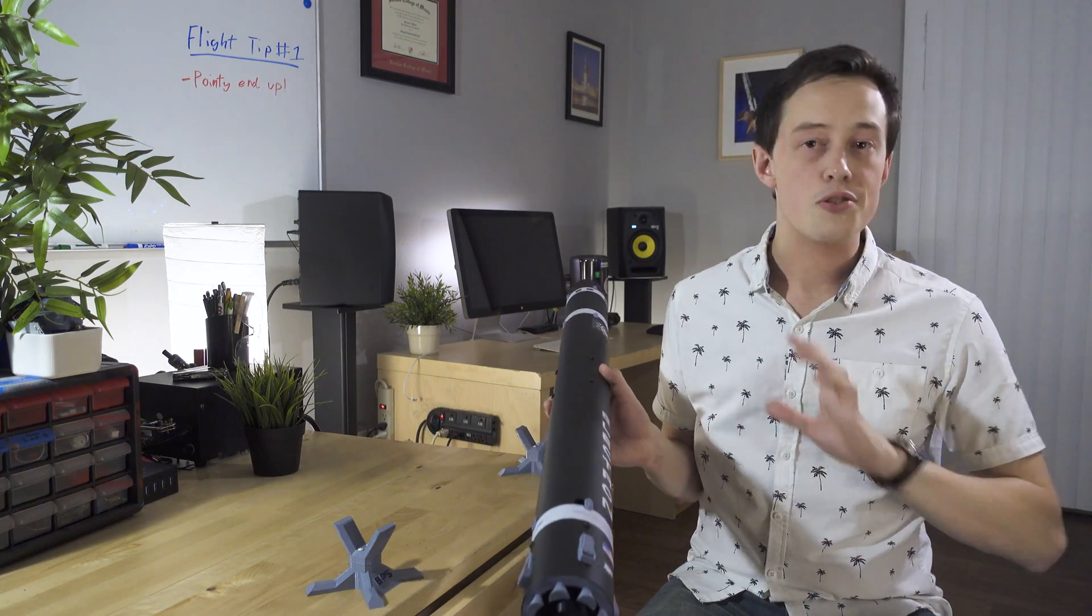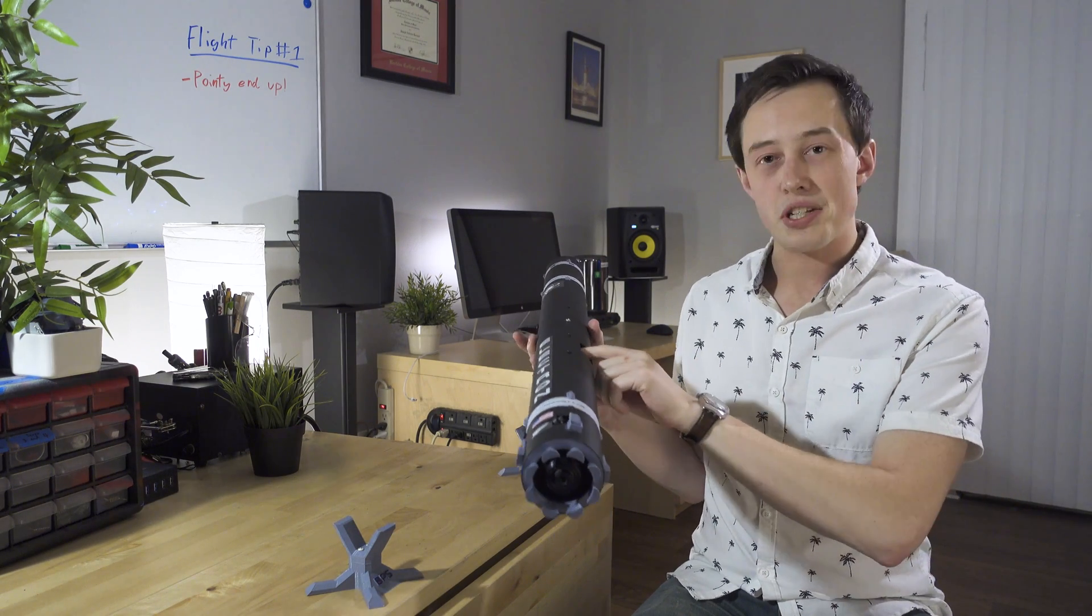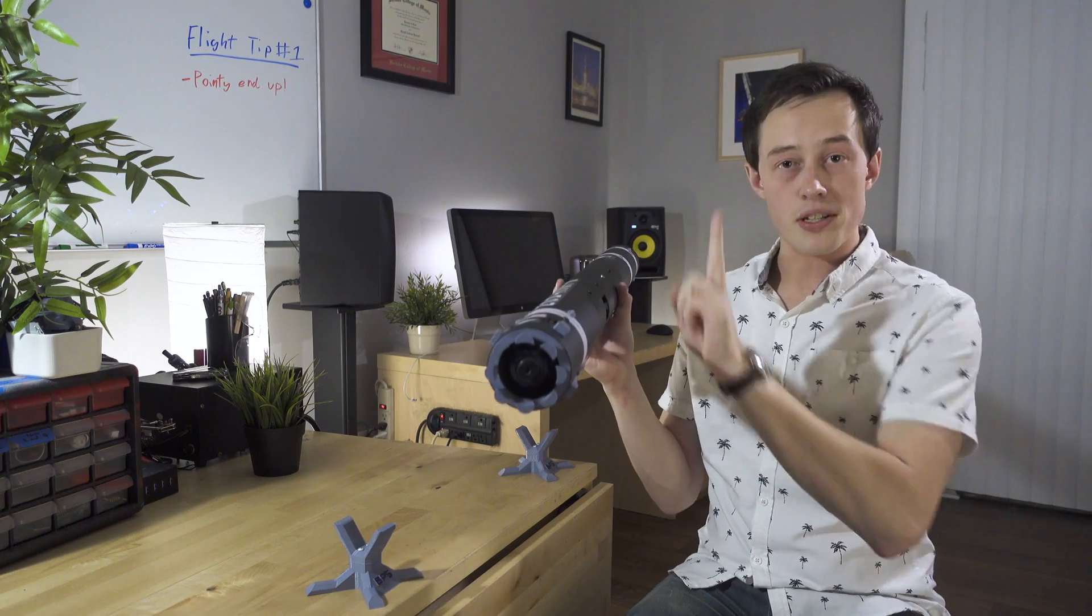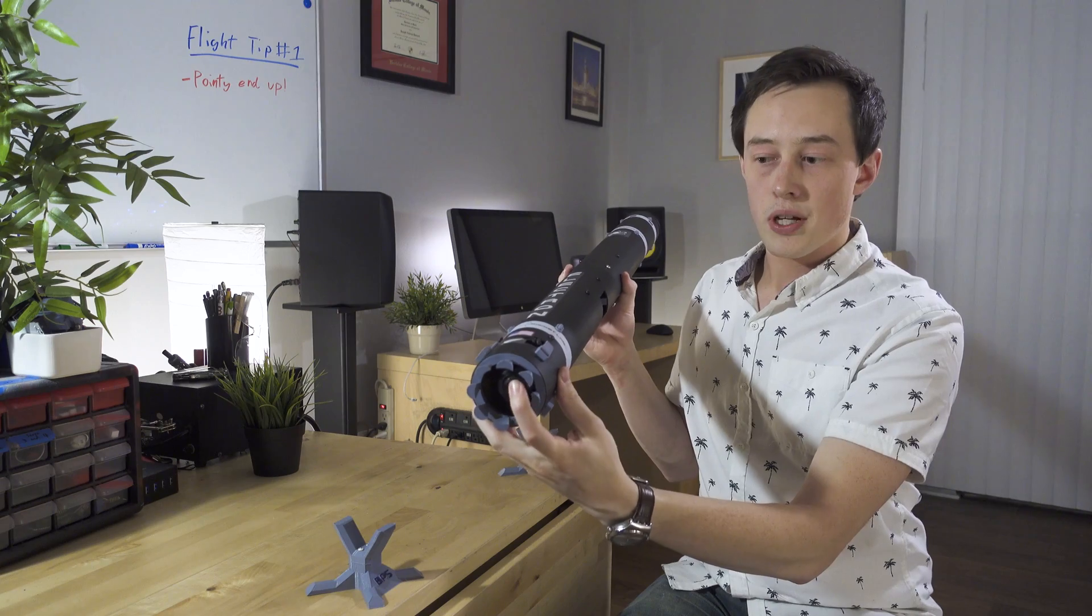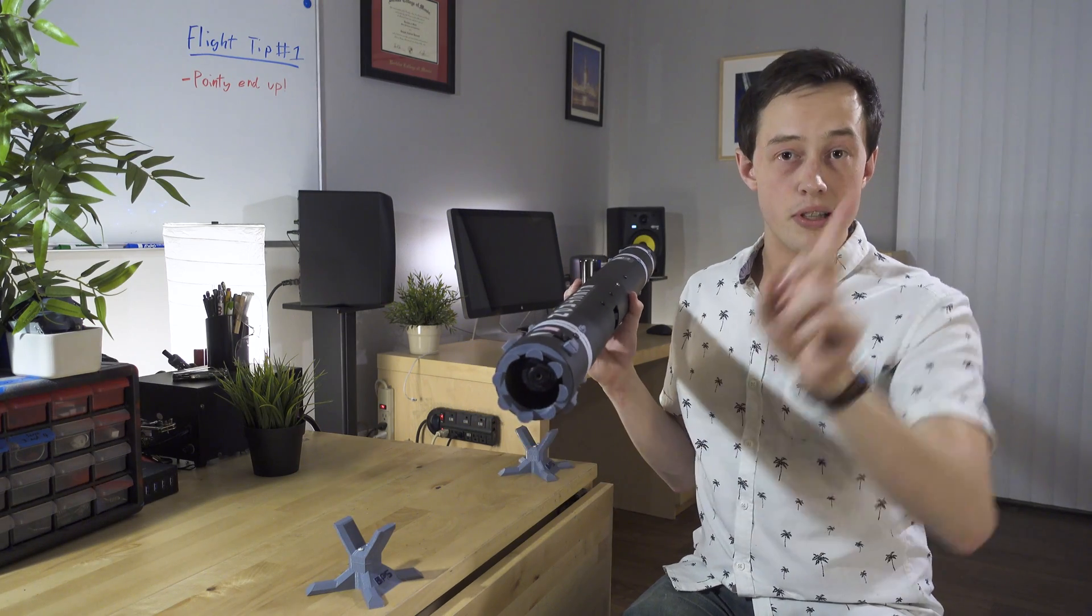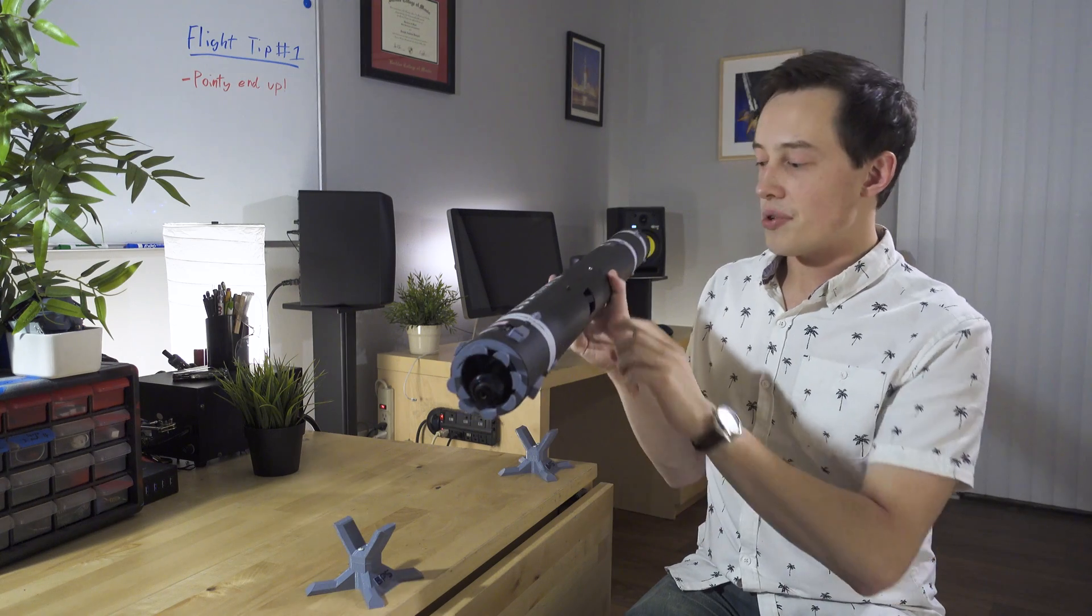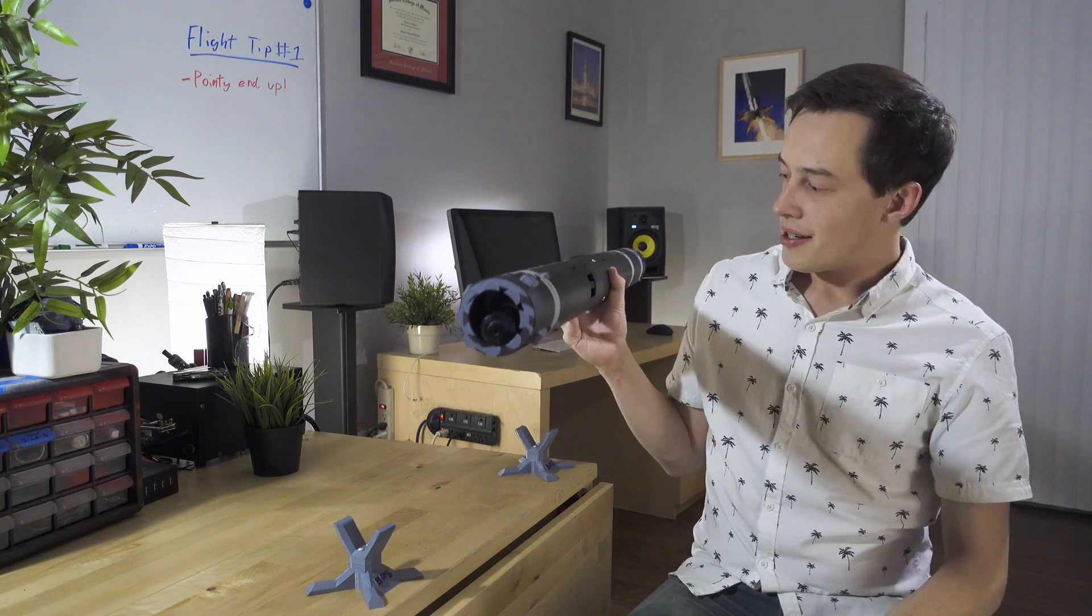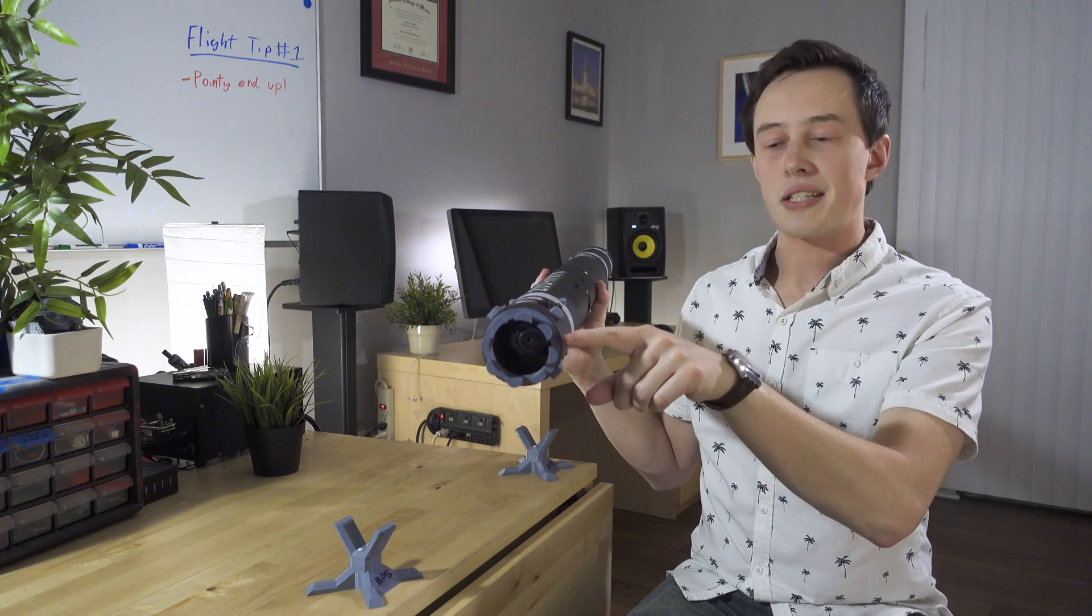And then what you also want to do is just watch the TVC mount during startup. We covered this before, but let's do it again. So the flight computer is facing upward with the Signal text facing this way, which means that during startup the mount should go this way, to the top left, or to your top right corner. So I'm going to put it down here and we'll start it up and see how it goes. Here we go. And there it is. That's the top right corner.